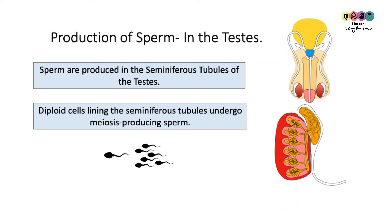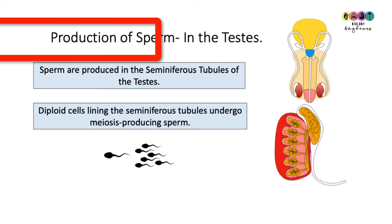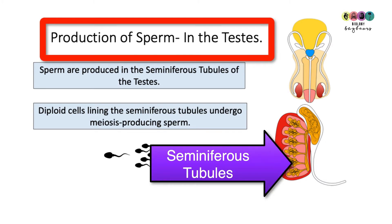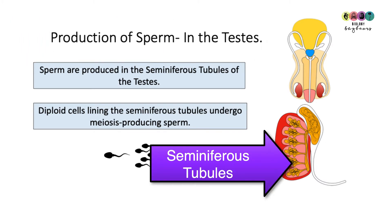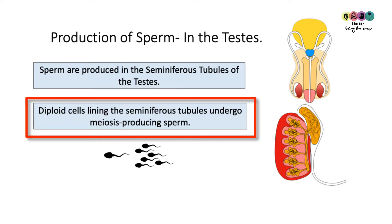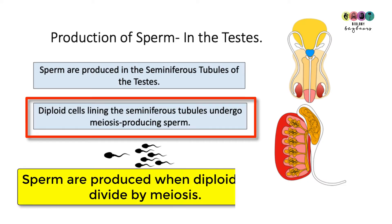The sperm are produced in the testes — that's an important statement, always state that. The testes are made up of seminiferous tubules, and there are diploid cells lining these tubules. It's these diploid cells that undergo meiosis — very important that you state meiosis — to produce sperm.